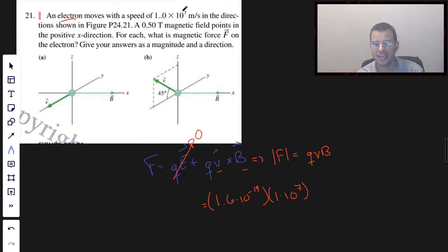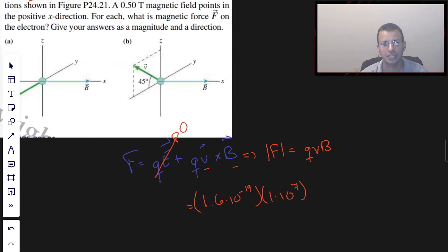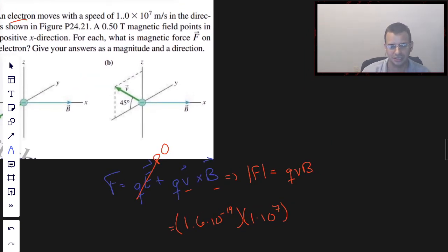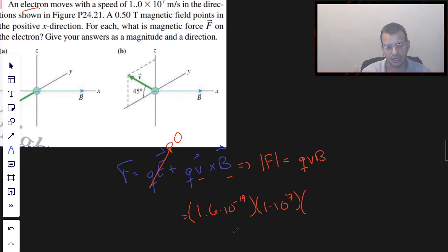Times 1×10^7 meters per second. Now, when you're getting that close to—usually, that's pretty close to the speed of light. Speed of light is about 3×10^8 meters per second. And so when you get things times 10^7, you really should start thinking about relativistic. But we're not going to worry about that here. Times 0.5.